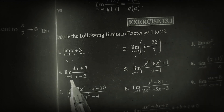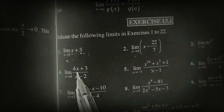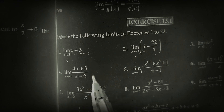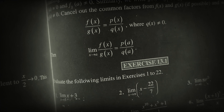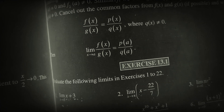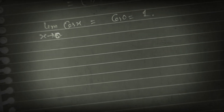Clear? Now come to the fourth question: (4x + 3) upon (x − 2). For solving this, firstly we will look at the algebra of limits. What is the algebra of limits?